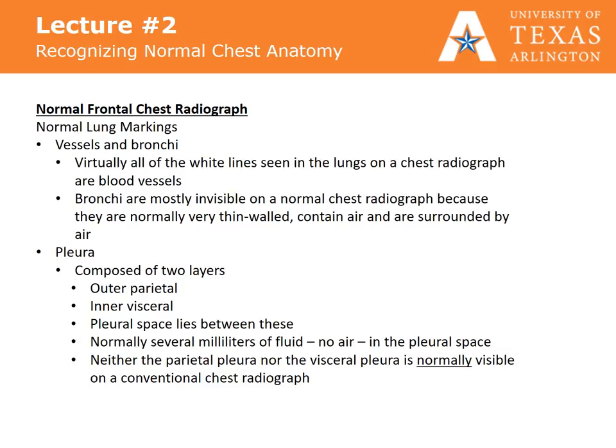Virtually all of the white lines seen in the lungs on a chest radiograph are blood vessels. Bronchi are mostly invisible on a normal chest radiograph because they are normally very thin walled, contain air, and are surrounded by air. The pleura is composed of two layers: the outer parietal and the inner visceral. The pleural space lies between these and normally contains several milliliters of fluid. There is no air in the pleural space. Neither the parietal pleura nor the visceral pleura are normally visible on a conventional chest radiograph.